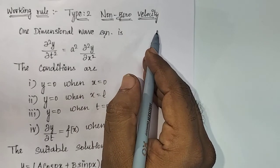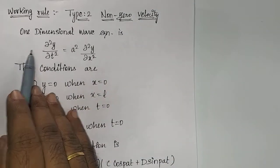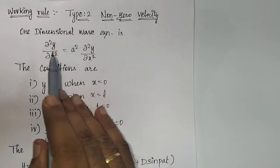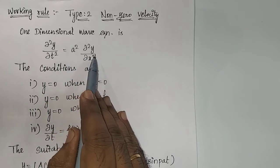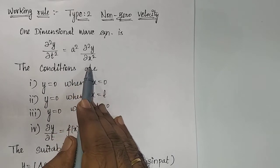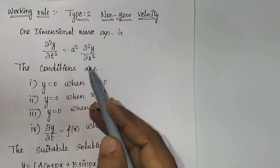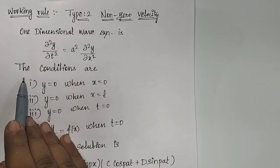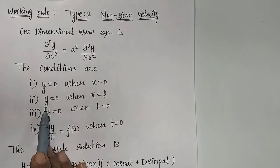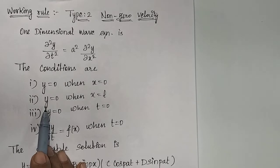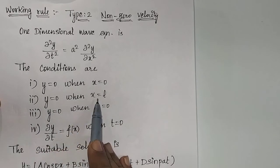We have to write the usual one-dimensional wave equation: ∂²y/∂t² = a² · ∂²y/∂x². After that, we write the conditions for non-zero velocity. First condition: y = 0 when x = 0. Second condition: y = 0 when x = L.